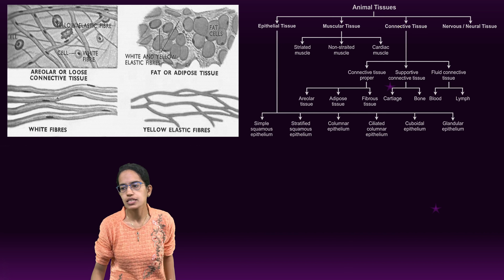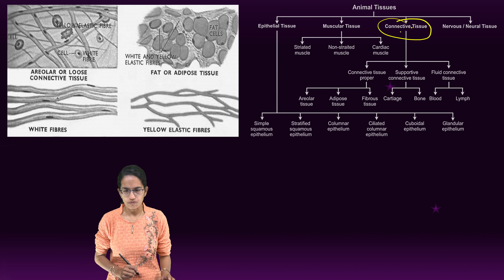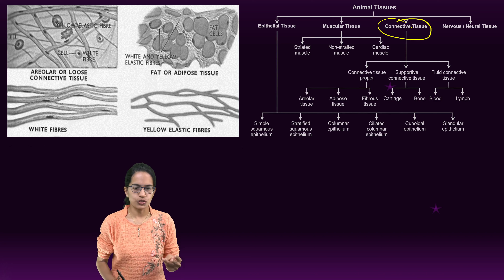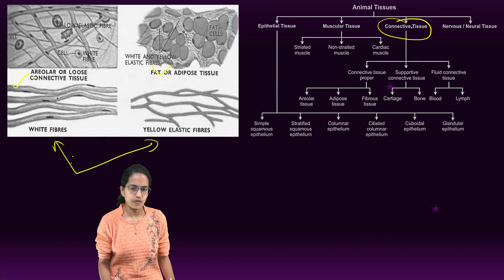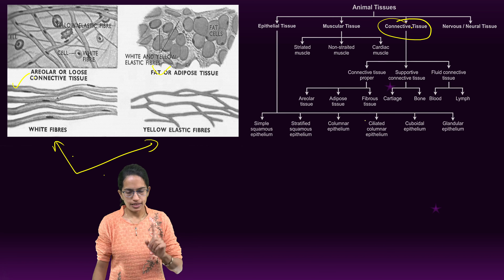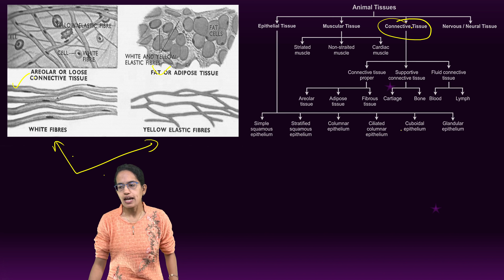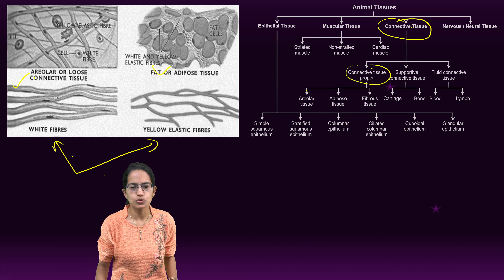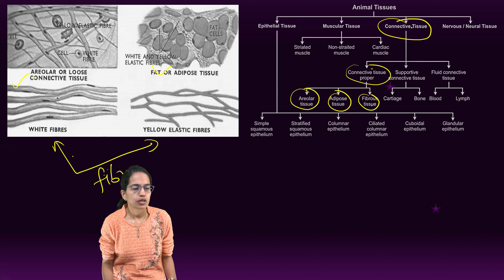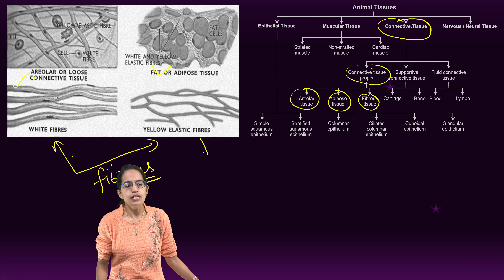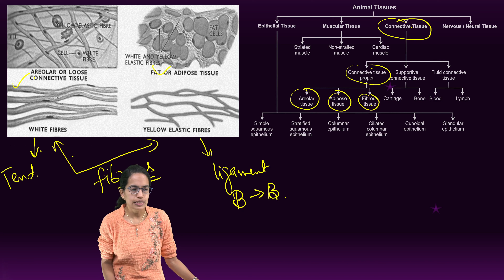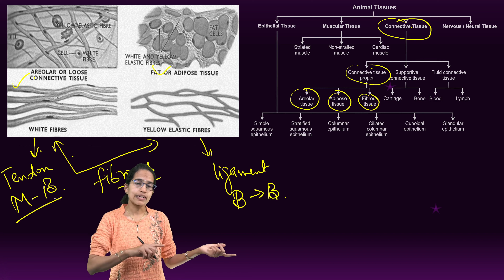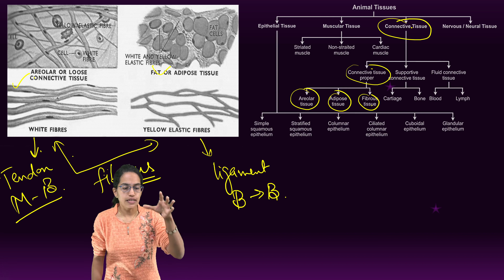The next classification is connective tissue. Under connective tissue, we have three types: proper connective tissue (including areolar, adipose, and fibrous), supportive tissue (cartilage and bone), and fluid connective tissue (blood and lymph). Under fibrous connective tissue, yellow fibrous is ligament — which connects bone to bone and is elastic in nature — while white fibrous is tendon, which connects muscle to bone. Ligaments are found at joints, blood vessels, and bronchioles; tendons are found where bones attach to muscles and in the dura mater of the brain and spinal cord.